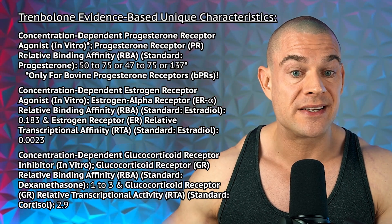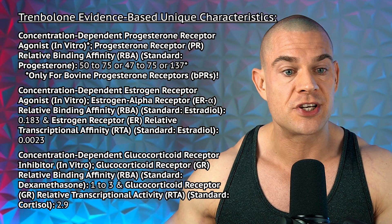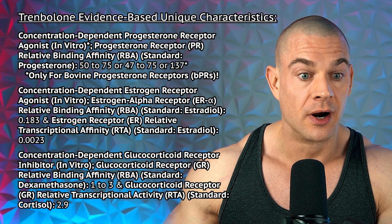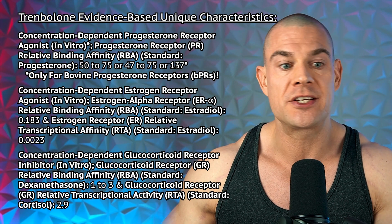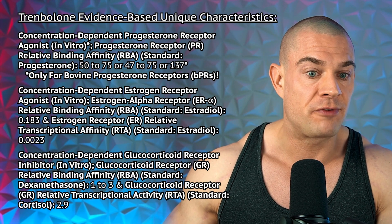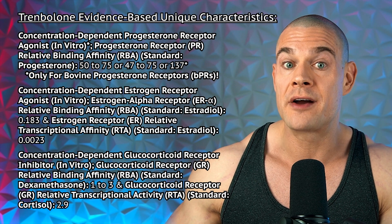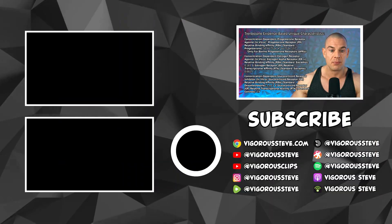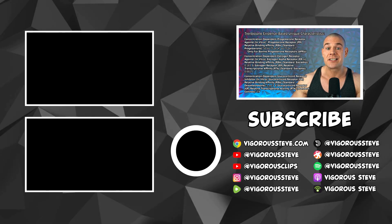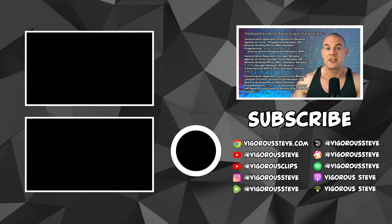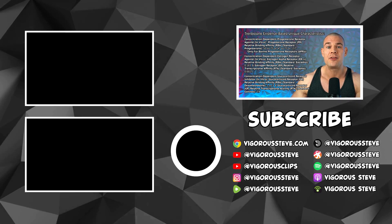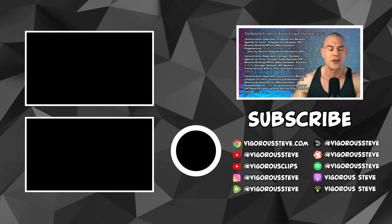Trenbolone is a concentration-dependent progesterone receptor agonist. It has a relative binding affinity for the progesterone receptor compared to progesterone of either 50 to 75, 47 to 75, or 137 — but that 137 figure is only for bovine progesterone receptors. Even though we're not done with the evidence-based unique characteristics, it's time for a study overlay.